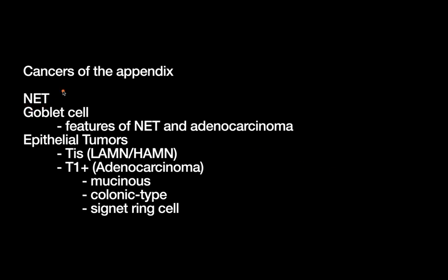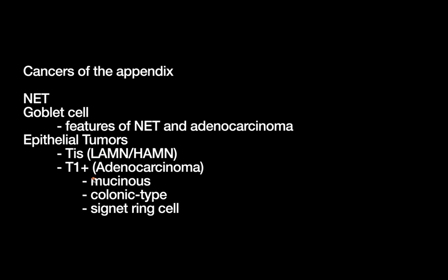Starting off, we have neuroendocrine tumors of the appendix. Historically these were known as carcinoid tumors, although that term has fallen out of favor — you should really be using the term neuroendocrine tumor of the appendix. There's another subtype called goblet cell tumors, placed here between the two because they have features of both neuroendocrine tumors and adenocarcinomas. Then there are the epithelial tumors of the appendix. The TIS category — tumor in situ — is an important category here, in addition to adenocarcinomas, which are epithelial tumors that are stage T1 or above. These adenocarcinomas can be mucinous-producing or not; for example, a signet ring cell is a mucinous-producing subtype that is particularly aggressive.